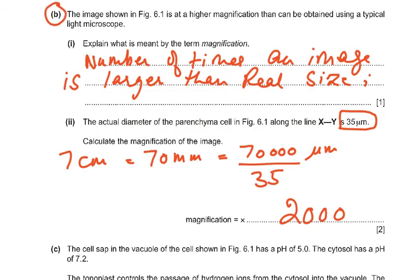Part B: The image in figure 6.1 is at a higher magnification than can be obtained using a typical light microscope. Magnification means the number of times an image is larger than the real or actual size. You must know the definitions of magnification and resolution from the syllabus — underline and learn them.